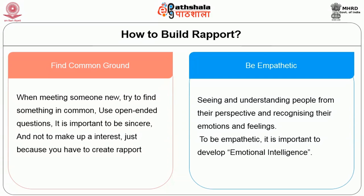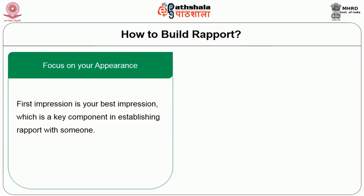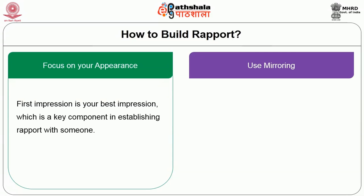Be empathetic — seeing and understanding people from their perspective and recognizing their emotions and feelings. To be empathetic, it is important to develop emotional intelligence. Focus on your appearance — first impression is your best impression, which is a key component in establishing rapport. Use mirroring — adjusting your own body language and spoken language to reflect the person with whom you are communicating. Copy the person's posture and gesture. As the person gets comfortable with you, they might change their body language into a more comfortable position — mirror and change as well. Copy the other person's language, including simple direct words or technical language.